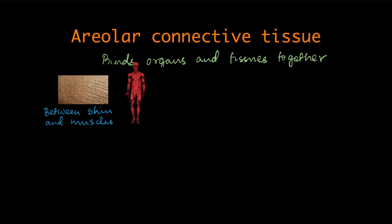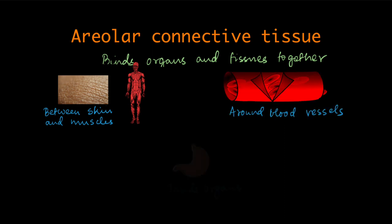For example, it is present between the skin and the muscles underneath. It is present around the blood vessels. It's present inside organs even, that is in between the different tissues that are there inside organs such as the stomach. So how does this tissue keep the organs together and what else does it do? Let's take a look.